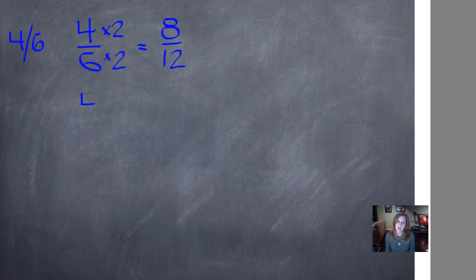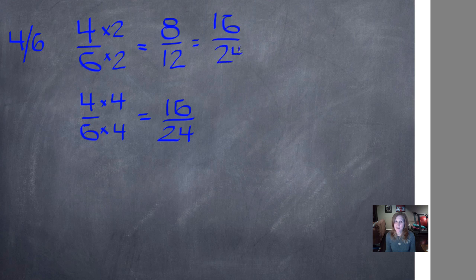We could also multiply them by a different number. Let's try, hmm, let's try four. Four times four is sixteen. Six times four is twenty-four. So, four-sixths is equivalent to sixteen-twenty-fourths. And here's something else interesting. Eight-twelfths is equivalent to sixteen-twenty-fourths, because eight times two is sixteen, and twelve times two is twenty-four.